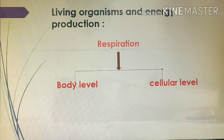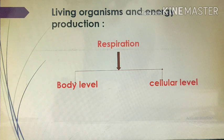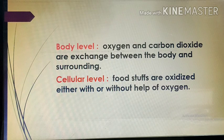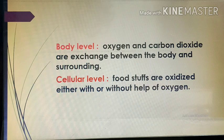Respiration takes place by two ways: body-level respiration and cellular-level respiration. In body-level respiration, oxygen and carbon dioxide are exchanged between the body and the surroundings — oxygen is taken in through the nasal passage and carbon dioxide is released outside the body through the nose. This is body-level respiration.